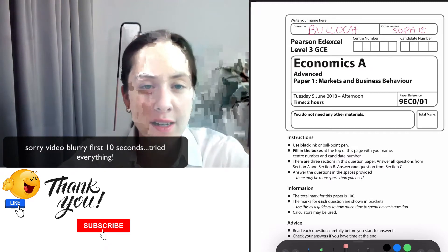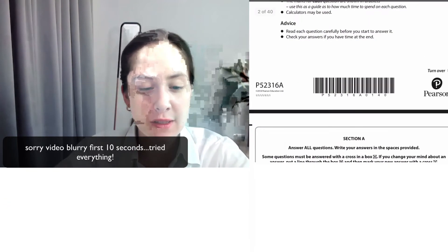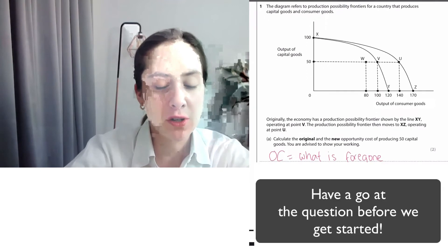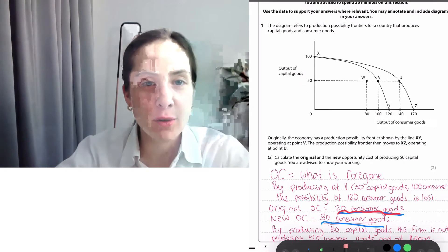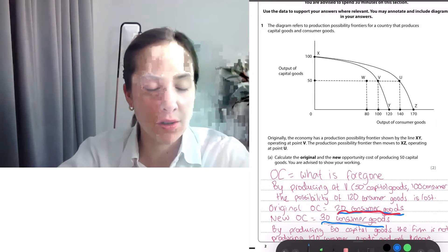Hey, welcome to an Edexcel paper one walkthrough. This is the 2018 paper. We're going to walk through just section A for this video. First question, we're asked about the opportunity cost.